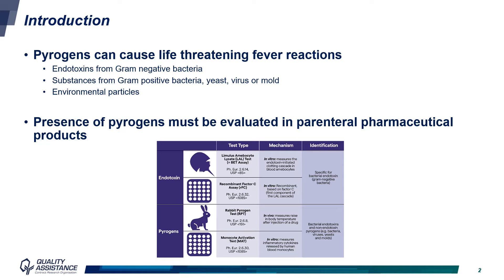Different types of assays can be used to detect pyrogens. For a long time, the reference method was the rabbit pyrogen test, in which products are injected in rabbits and body temperature is measured in order to detect fever reaction. Due to the variability of the results and the 3R principle, other techniques such as LAL, which uses limulus amebocyte lysate, or recombinant factor C assays were developed. These in vitro assays are less time-consuming, but only allow for the detection of endotoxins. Indeed, non-endotoxin pyrogens cannot be detected by this method.